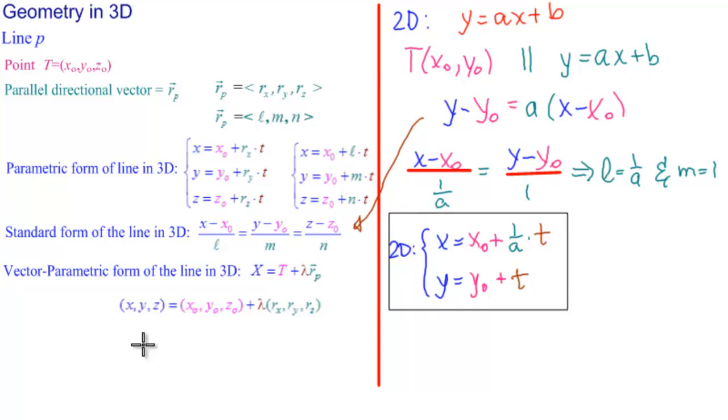And similarly, if we're told to find the vector parametric form, we simply say the first one would be x equals t plus lambda times 1 over a, 1,